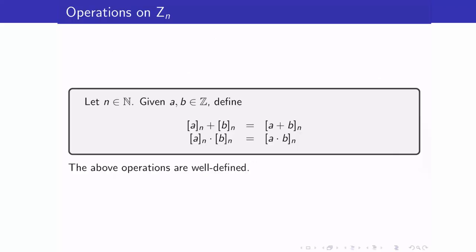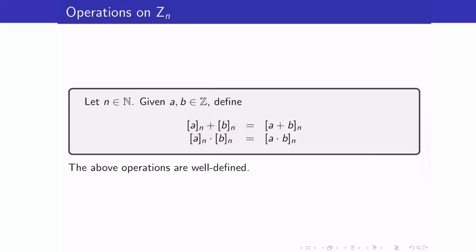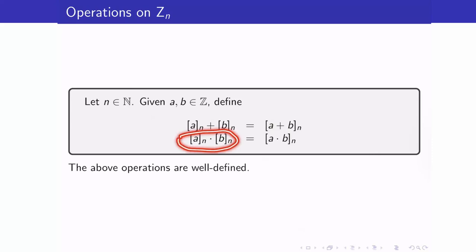What are these operations? Take note that we are adding two equivalence classes here — these are not numbers, they are equivalence classes. So how can we add sets? We define the sum of two equivalence classes to be the equivalence class containing the sum of the representatives. Similarly, we define the product of two equivalence classes to be the equivalence class of the product of the representatives.